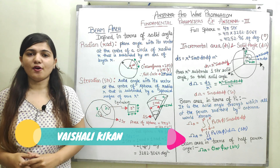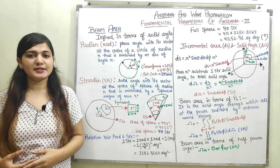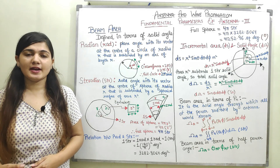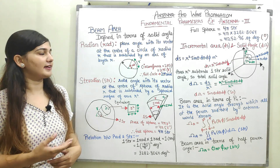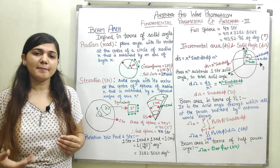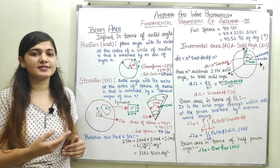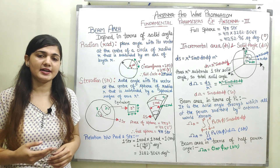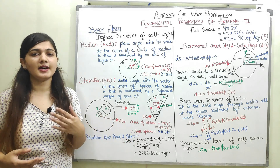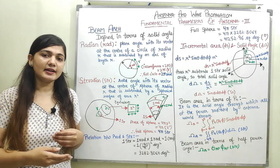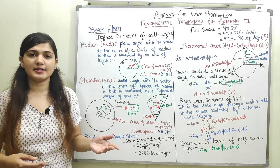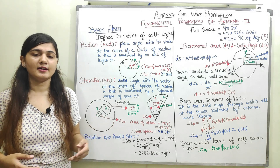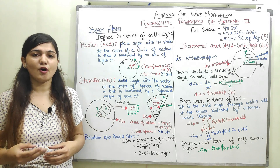Welcome to this video lecture series on Antenna and Wave Propagation. In this video, we will discuss the third fundamental parameter of the antenna, which is beam area. Beam area is defined in terms of solid angle. When I pass current to a transmitting antenna, it starts radiating. Most transmitting antennas are directional in nature — radiating more in one particular direction and less in others. To measure the angle over which this antenna is radiating, I need a quantity called beam area, measured in terms of solid angle.